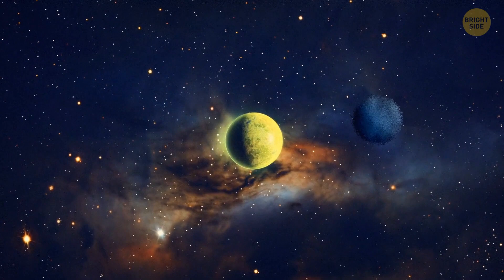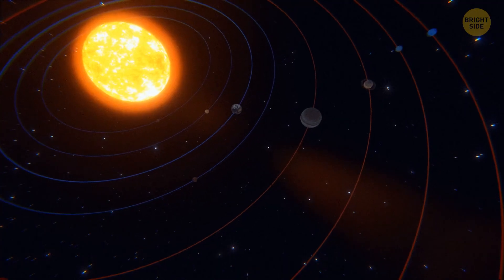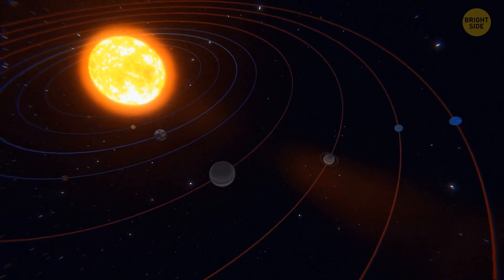Or torn apart by the strong gravitational pull of its parent planet. The gas giants formed in the outer regions of our solar system, while all the rocky planets are in the inner part.